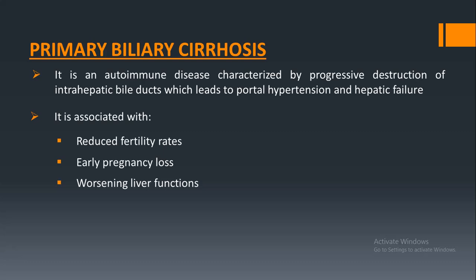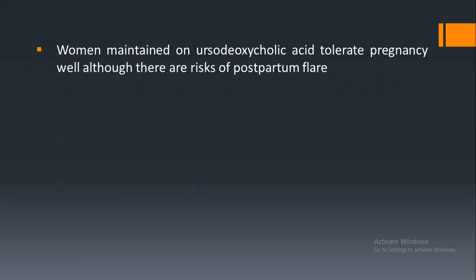Primary biliary cirrhosis is an autoimmune disease characterized by progressive destruction of intrahepatic bile ducts, leading to portal hypertension and hepatic failure. In primary biliary cirrhosis there is a reduced fertility rate, increased risk of miscarriages, and worsening liver function. Treatment is with ursodeoxycholic acid; there is a risk of postpartum flare.